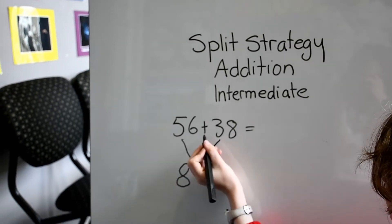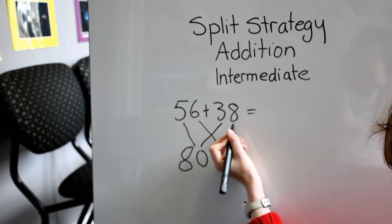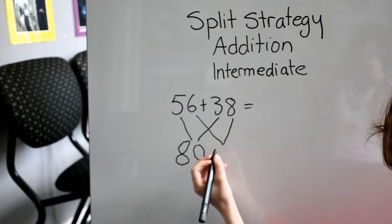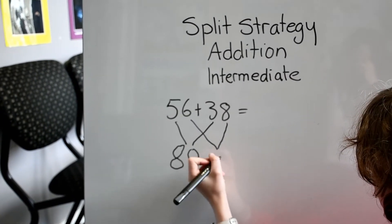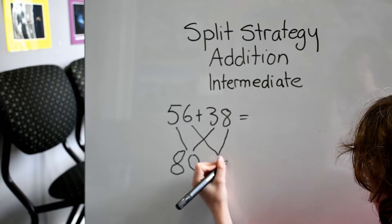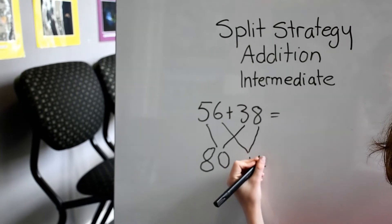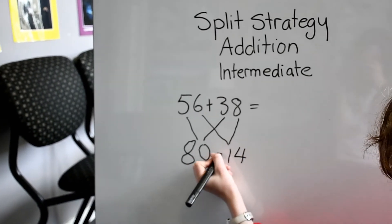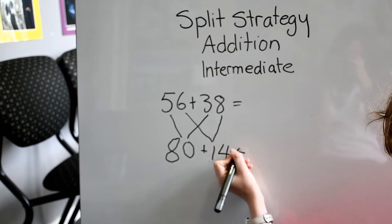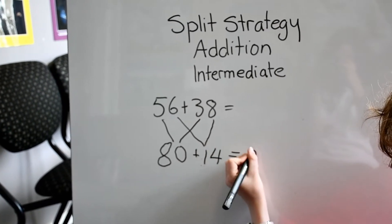We then do the units. 6 plus 8 equals 14. We then add them together to get a grand total of 94.